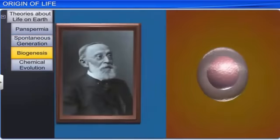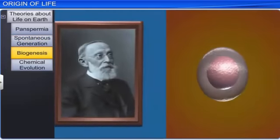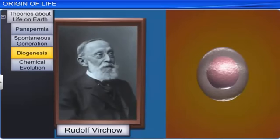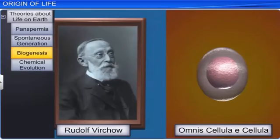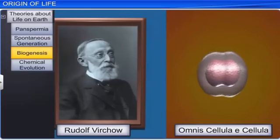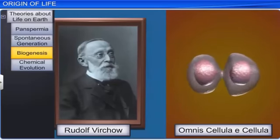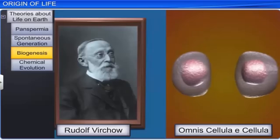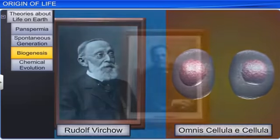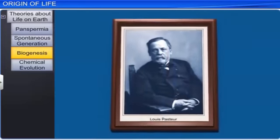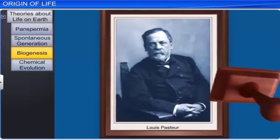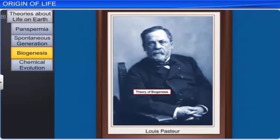The theory of spontaneous generation was in vogue until a German biologist, Rudolf Virchow, challenged it with his theory called Omnis Cellula A Cellula, which expounded that living cells can arise from pre-existing cells. However, he could not prove this theory of biogenesis. Later on, Louis Pasteur, with his experiments, proved the theory of biogenesis and forever silenced the advocates of spontaneous generation.